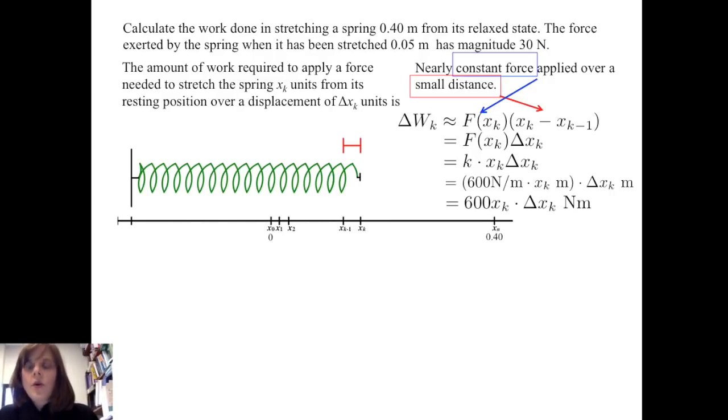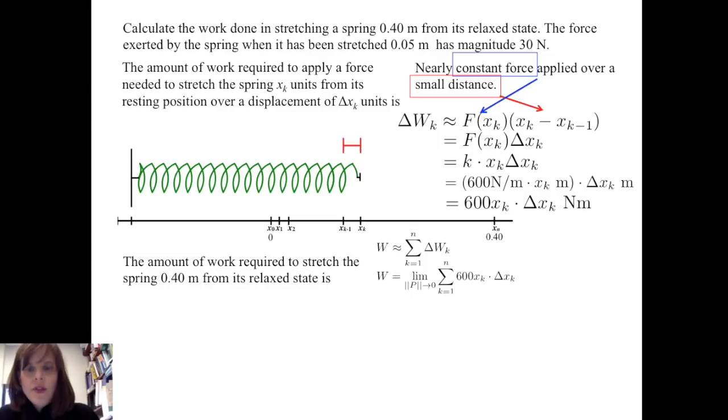So to calculate the whole amount of work done to stretch the spring from zero to 0.4 m, I simply sum up the small amounts of work. So W is the limit as the norm of the partition goes to zero of the sum k going from 1 to n of 600xₖ times Δxₖ.